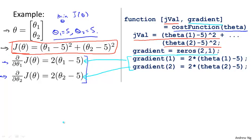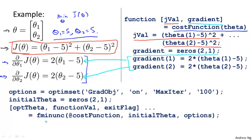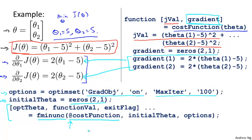Having implemented this cost function, you can then call the advanced optimization function fminunc — it stands for function minimization unconstrained in Octave. You set a few options: GradObj on, which means you're providing a gradient to the algorithm, and MaxIter set to 100. You provide an initial guess for theta as a two-by-one vector. Then you call fminunc with a pointer to the cost function, the initial guess, and the options. This will use one of the more advanced optimization algorithms — think of it as gradient descent but automatically choosing the learning rate alpha — to find the optimal value of theta.